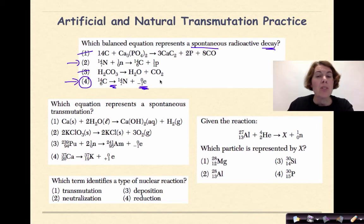Which equation represents spontaneous transmutation? Pretty much the same type of question as we saw before. Remember, spontaneous here is going to mean a decay reaction. If we look at this, one and two are chemical reactions, so those are out. Three is out because we have plutonium-239 being bombarded with multiple neutrons forming americium-241 and releasing a beta particle. But the correct answer here again is four, where we have calcium-37 undergoing decay to form potassium-37 and a positron.